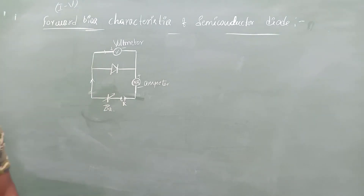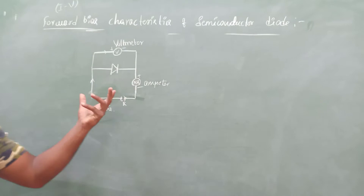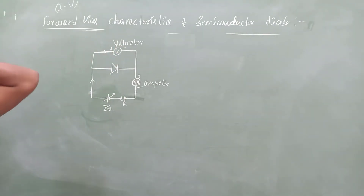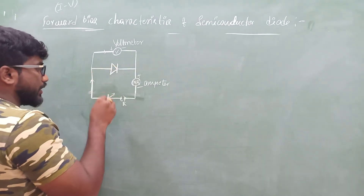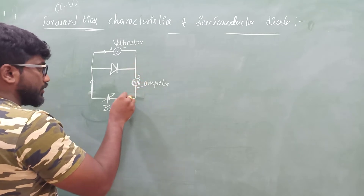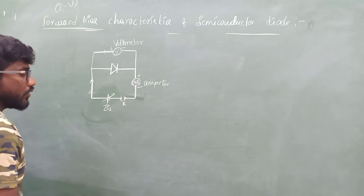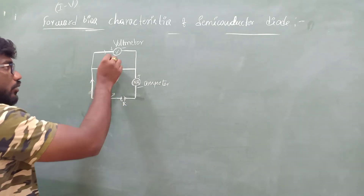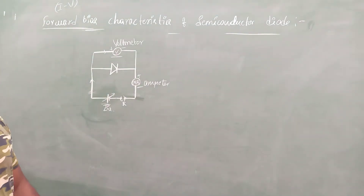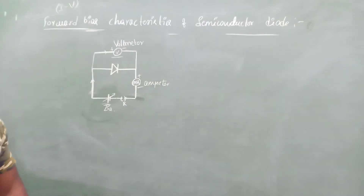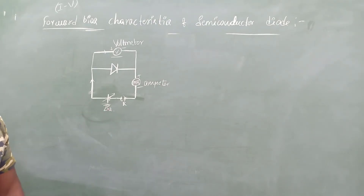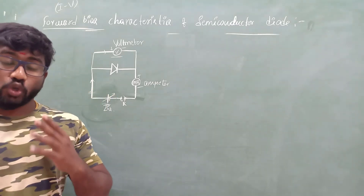IV means I is current and V is voltage. Now let us see the construction or the circuit diagram. This is a diode — the positive terminal of the diode is connected to the P side of the battery and the negative terminal is connected to the N side. To find the voltage across the diode, we have connected a voltmeter, and we have also connected a milliammeter because here it is forward bias.